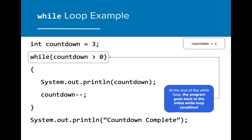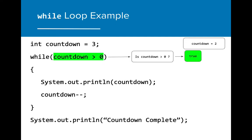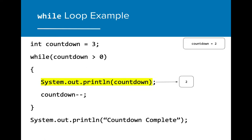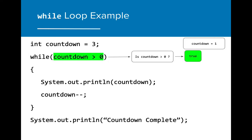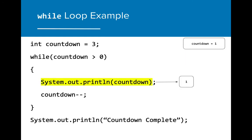Now the code within the while loop has finished. The program will go back to the initial while loop condition to test if the condition is still true. Since the condition is still true because two is greater than zero, the while loop will run again. The value of countdown will print, which is now two, and then the value of countdown is reduced by one. The while loop then returns to the beginning to test the initial condition again. Once again, the value of countdown is greater than zero, so the while loop executes. The value of countdown is printed, and then countdown is reduced by one.